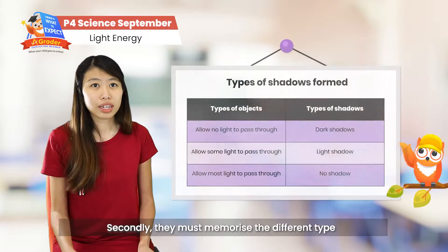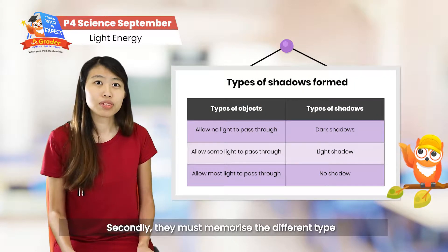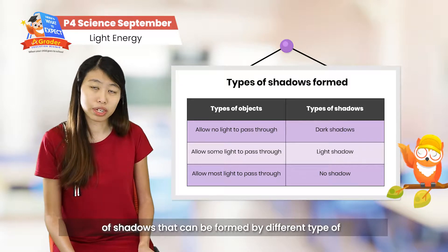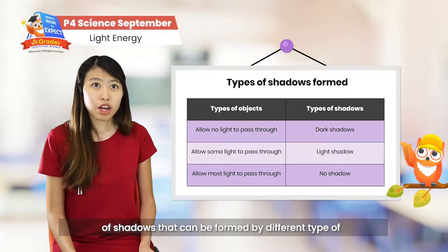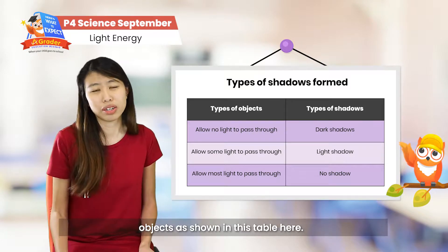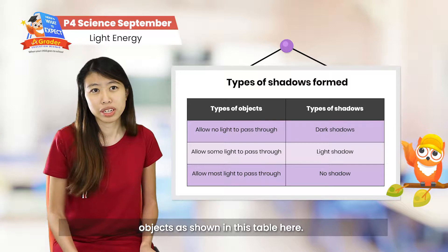Secondly, students must memorize the different types of shadows that can be formed by different types of objects, as shown in this table here.